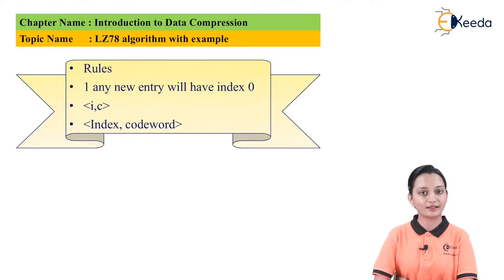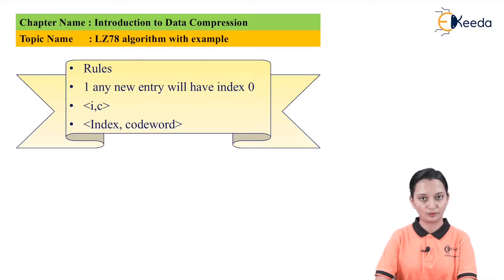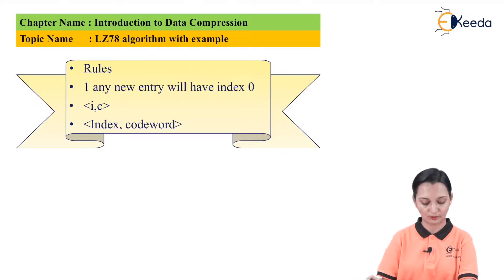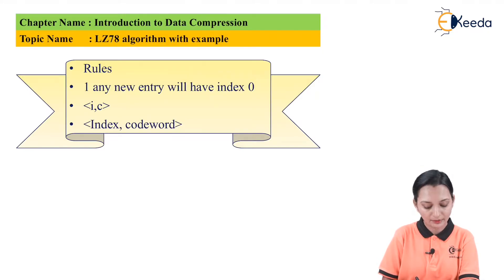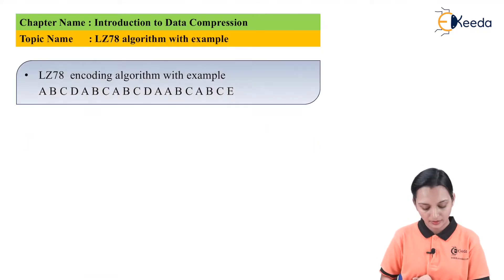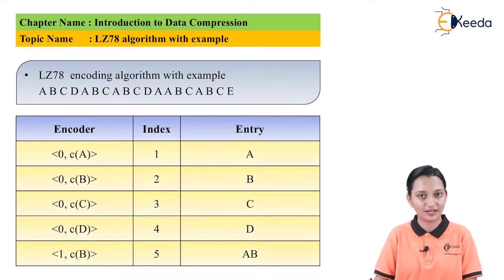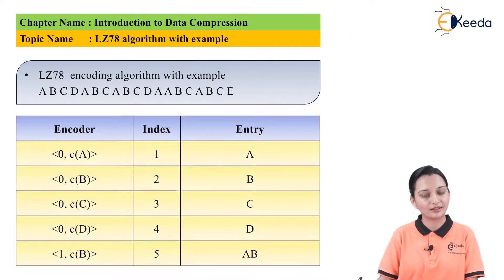LZ78 is a technique of data compression. Here, the given code we require to compress, so that the new rule will arise like LZ77. The first rule is: any new entry we write down in the format i, c — where i represents the index and c represents the codeword. It is better to solve an example so that you can easily understand how the index and codeword are required to be written as per the entry.